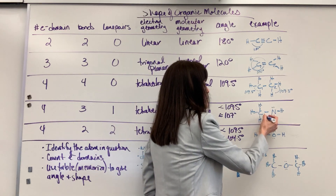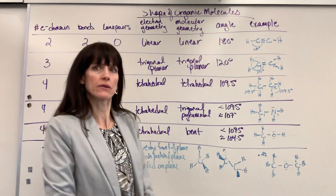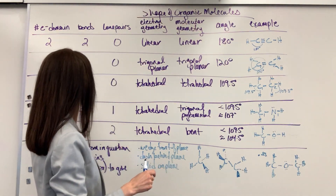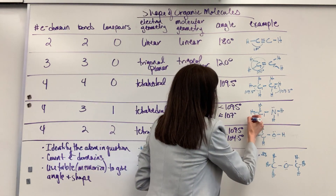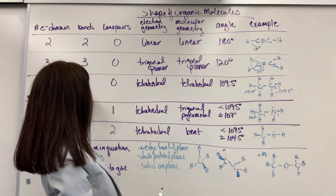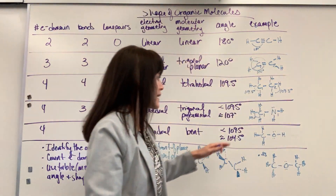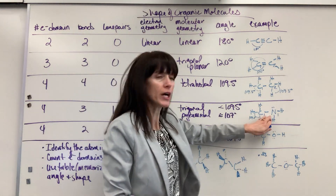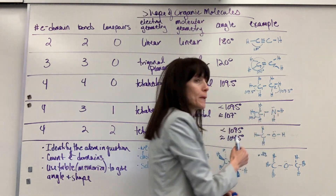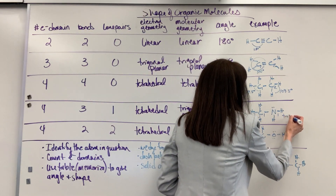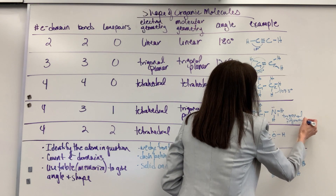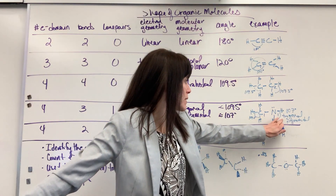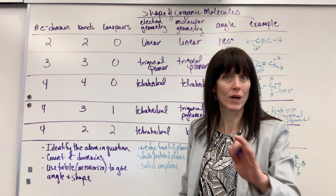Now let's count. I'll call this nitrogen one. The carbon has four electron domains, all bonded — that would be tetrahedral at 109.5 degrees. The nitrogen has four electron domains: three bonds and one lone pair. So this nitrogen is going to be trigonal pyramidal, and the angle between its bonds is 107 degrees. That lone pair is what changes both the name and the angle.